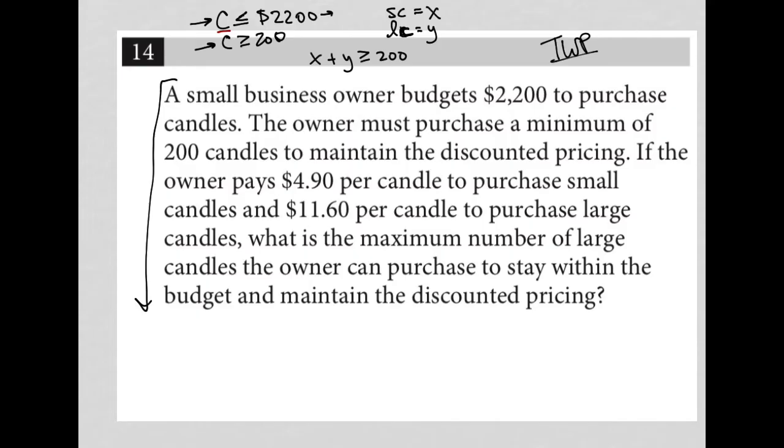And then the conversion for this one would be, I'd have to include the pricing, right? So I'd have 4.9X plus 11.6, right? For $11.60, Y must be less than or equal to 2200. So those are my translations.